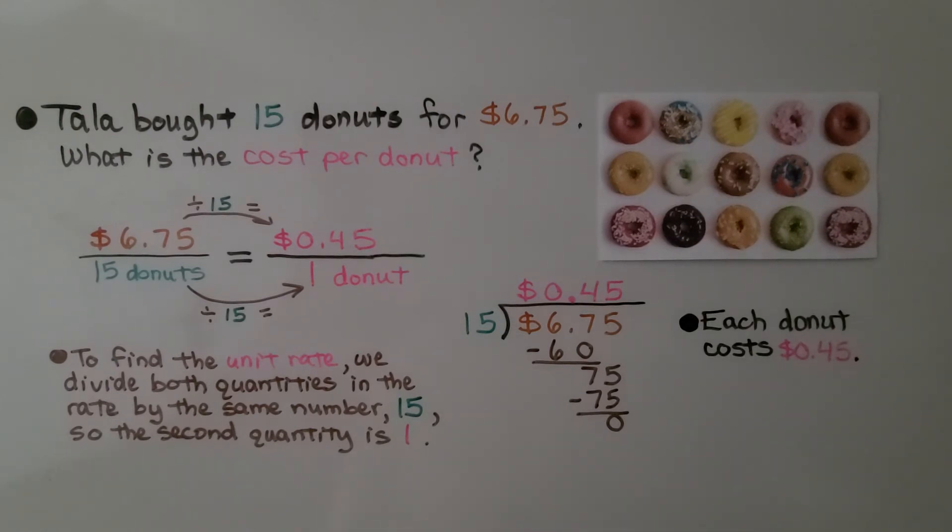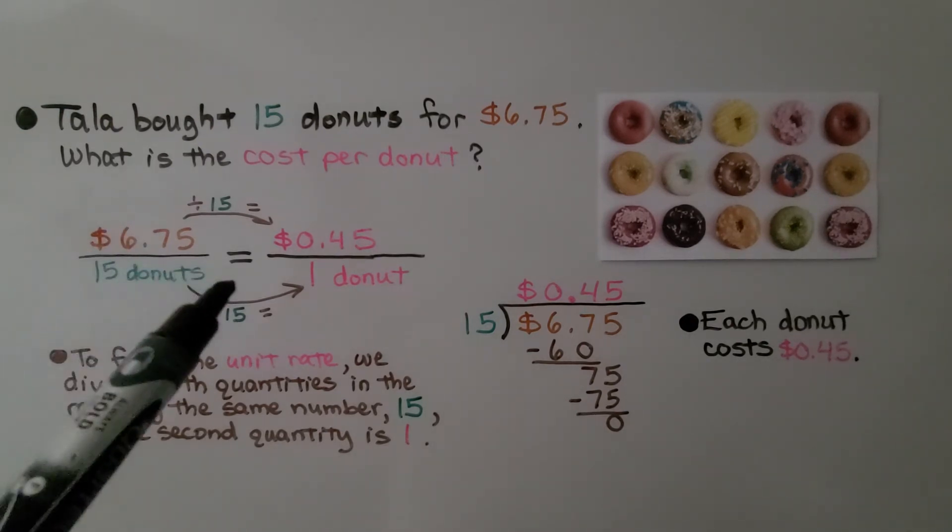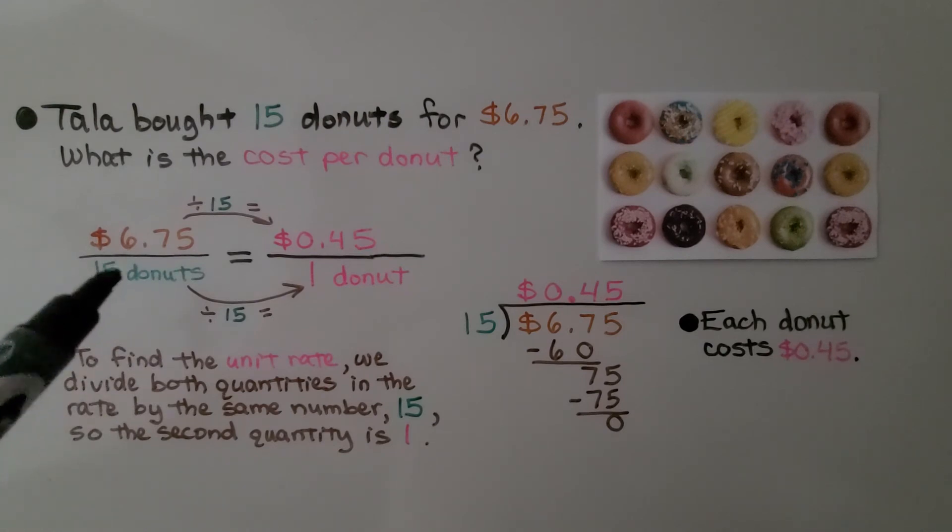Again, to find the unit rate, we divide both quantities in the rate by the same number, in this case 15, that was the denominator, so that the second quantity is 1.